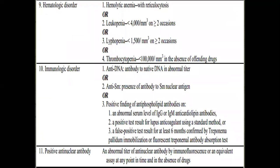The remaining three criteria are laboratory-based. First is hematologic affection: hemolytic anemia with reticulocytosis, or leukopenia less than 4,000 on more than two occasions, or lymphopenia less than 1,500 on two or more occasions, or thrombocytopenia less than 100,000 in the absence of offending drugs.